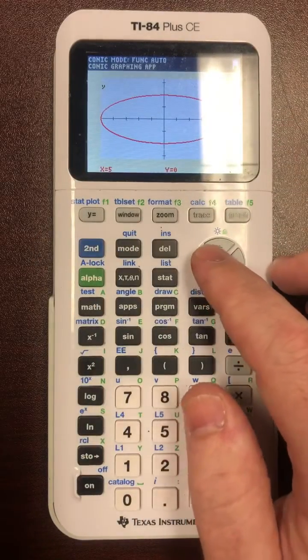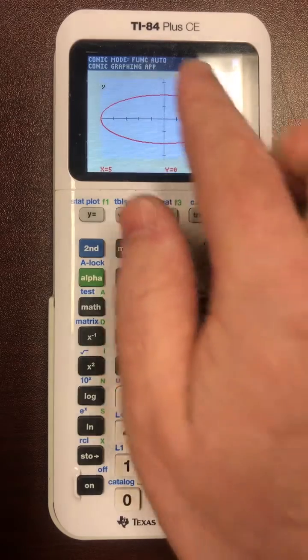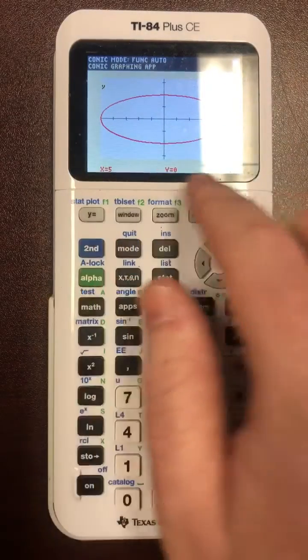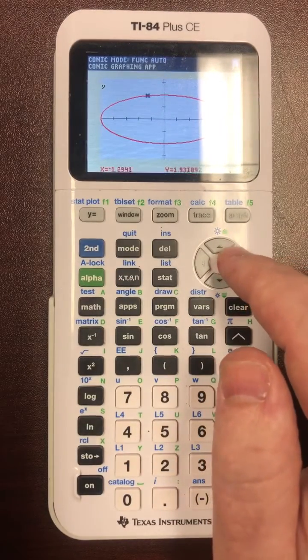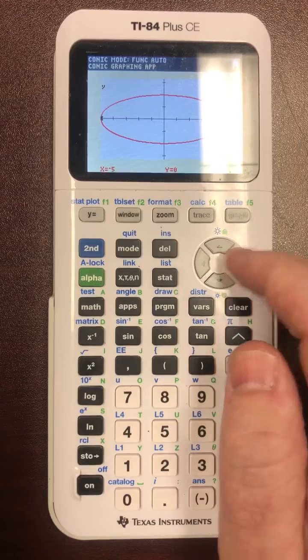If you need to look at precise values, you hit the trace button and you can trace around it. See how it says 5, 0, and you can keep going and it gives you 0 comma 2, and you can check your work that way.